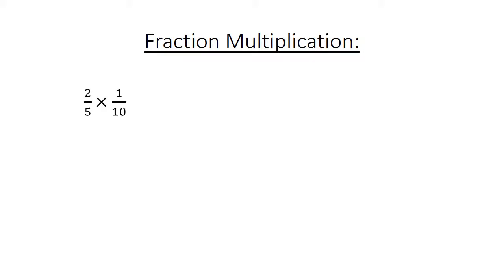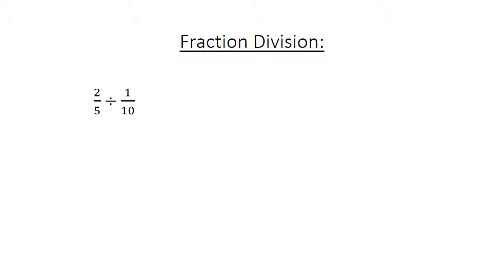Fraction multiplication: 2 over 5 times 1 over 10 equals 2 over 50, which equals 1 over 25. Fraction division: 2 over 5 divided by 1 over 10 equals 2 over 5 times 10 over 1 equals 20 over 5, which equals 4.